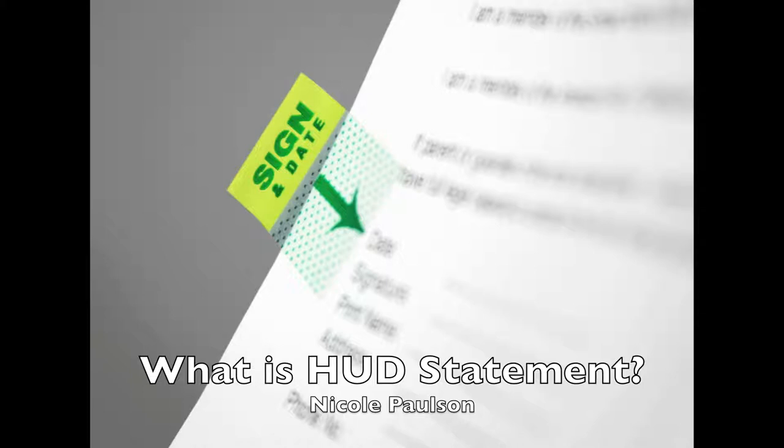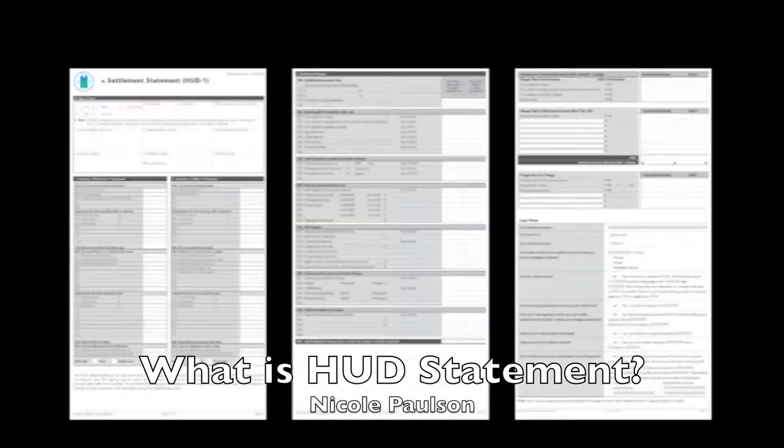A HUD is a correlation of putting everything together to be able to produce the final number so we can give you your bottom line. It's a two to three page settlement statement — the third page is usually just for the buyers. So the first and second page are what really applies to you as a seller.